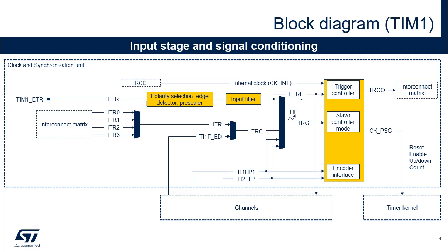ETR is a trigger that can be asserted by ADC analog watchdogs, comparators, or T1ETR input pin. ITR is a trigger that can be asserted by another timer. Internal trigger in and out are connected to the interconnect matrix. A rising edge of the selected trigger input, or TRGI, sets the TIF flag. When one timer is configured in master mode, it can reset, start, stop, or clock the counter of another timer configured in slave mode.